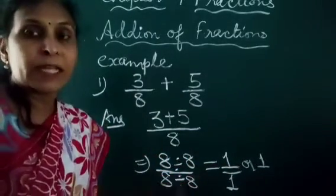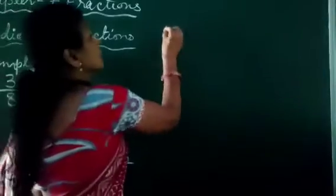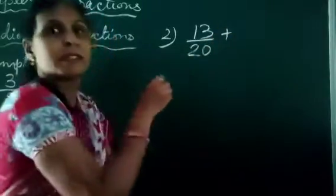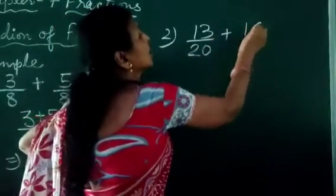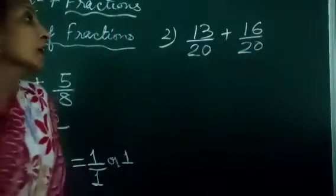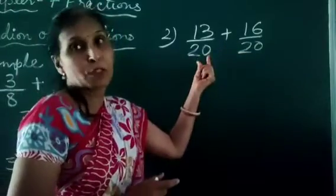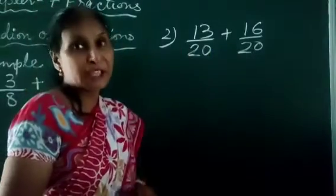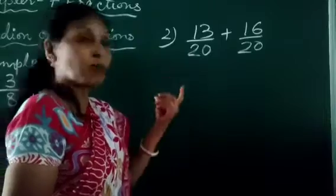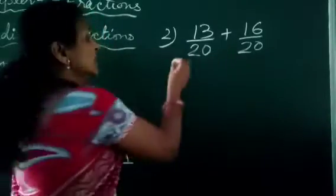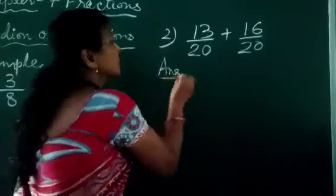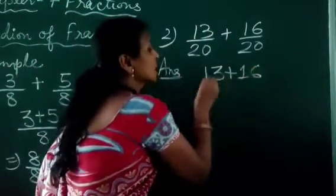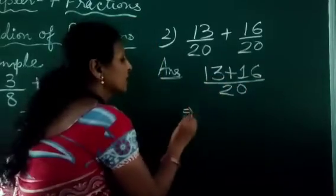Let's see another example of like fractions. It is 13 upon 20 plus 16 upon 20. These two fractions are like fractions because the denominators are same. As you know, like fractions are those fractions whose denominators are same. For the first step, we add the numerators — that is 13 plus 16 — and write the common denominator, that is 20.